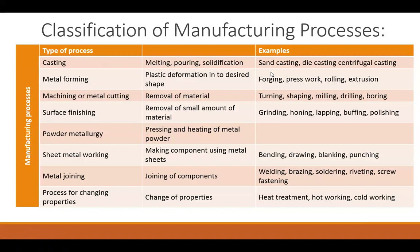The next process is the Metal Forming Process wherein plastic deformation of the raw material is used for converting it into the desired required shape. The different metal forming processes are Forging, Presswork, Rolling, and Extrusion.